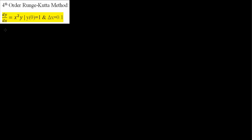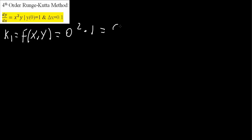We will say that k1 is equal to f(x, y). We use this formula here. When x is 0, the y value would be 1. So we get 0 squared times 1, and we get 0.